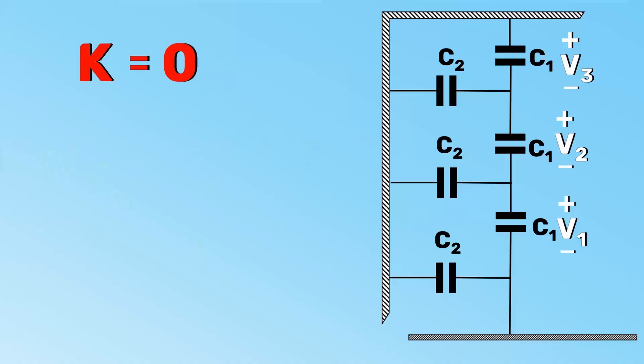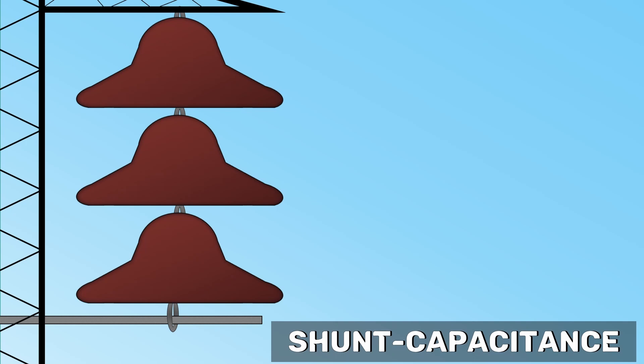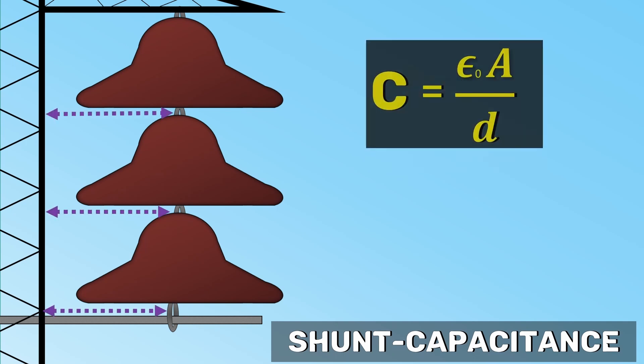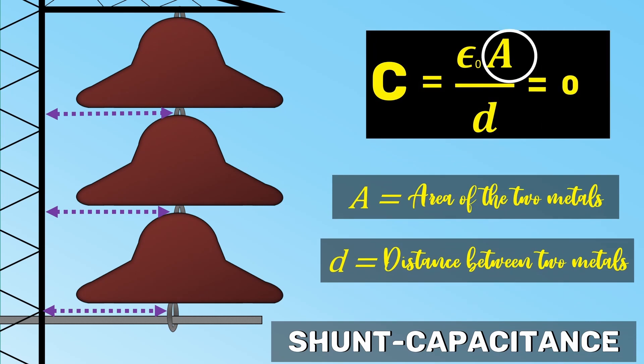What is K? K is the shunt capacitance divided by self-capacitance. This clearly says that the shunt capacitance should be 0 to achieve 100% string efficiency. We know that the shunt capacitance is due to the tower and the metal link. Capacitance is epsilon naught A by D. We cannot simply adjust the area close to 0 because we need mechanical strength.